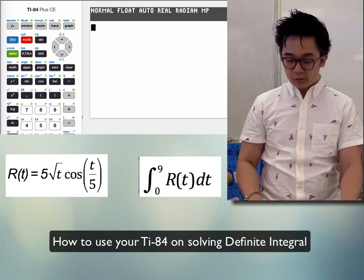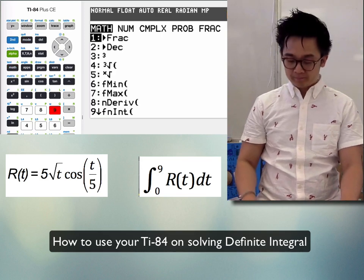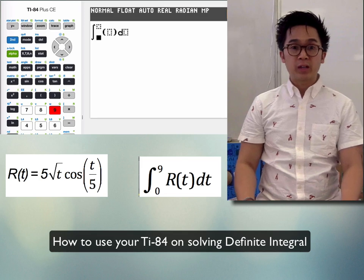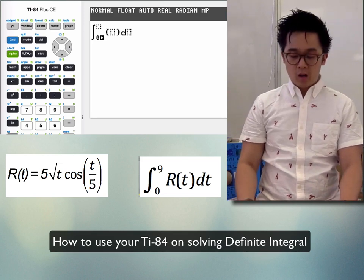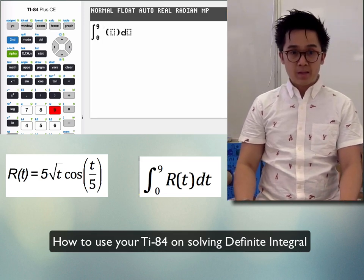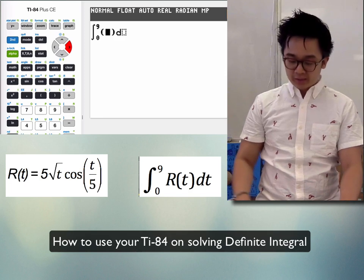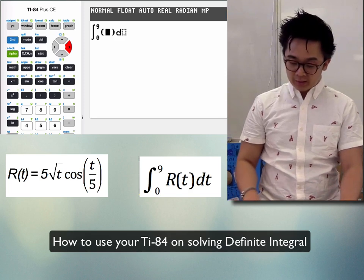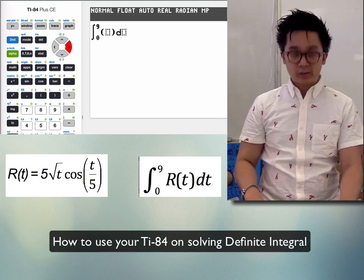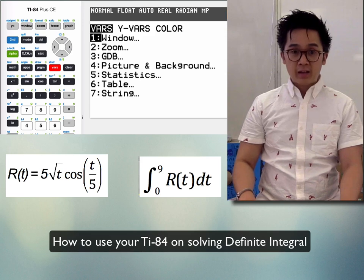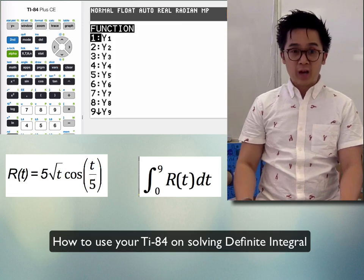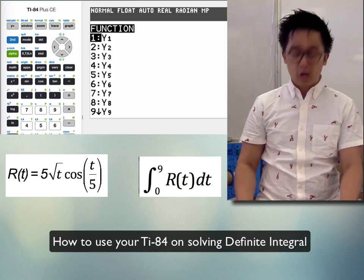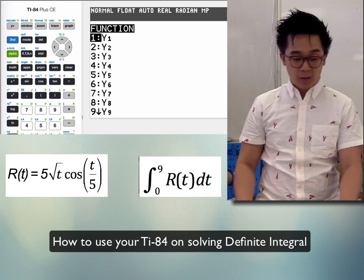To find the definite integral using your TI-84, push Math then 9 and it will give you the definite integral function. Evaluate from 0 up to 9 of your function r(t) — push VARS, go to Y-VARS, because we defined Y₁ as the function r(t) from our FRQ.